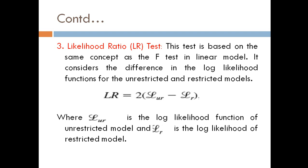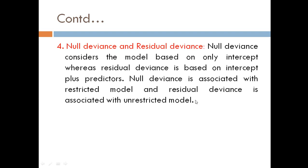LUR is the log likelihood function of the unrestricted model. LR is also known as L₀. Then null deviance and residual deviance. Null deviance considers the model based on only intercept, whereas residual deviance is based on intercept plus predictors. That's why null deviance is associated with restricted model and residual deviance is associated with unrestricted model.